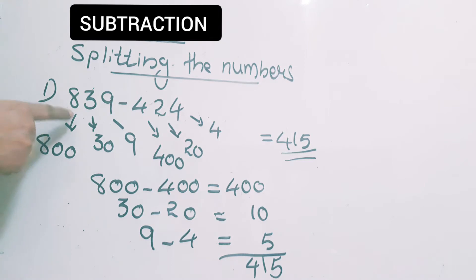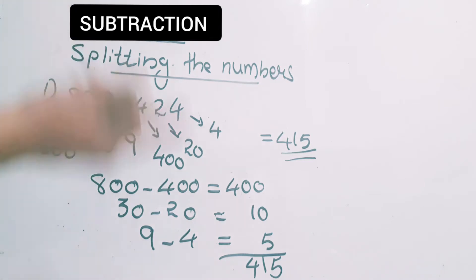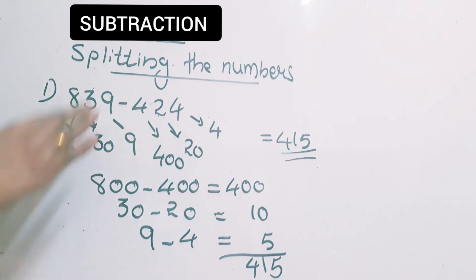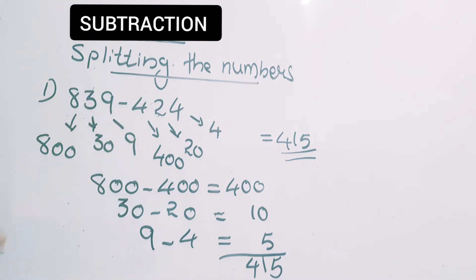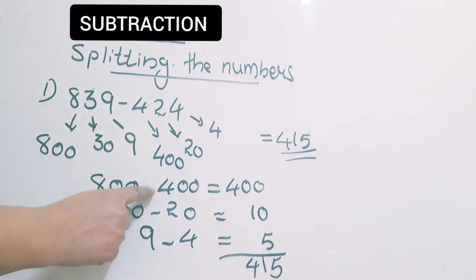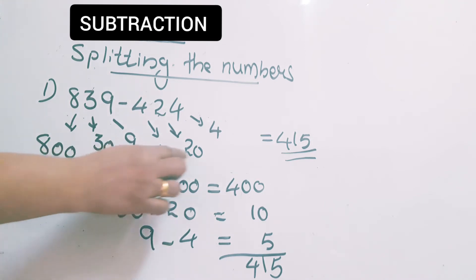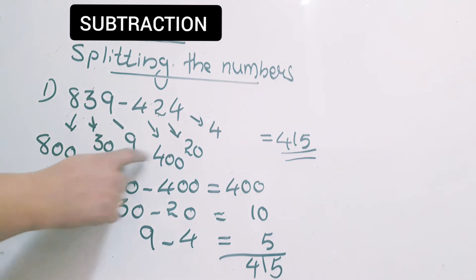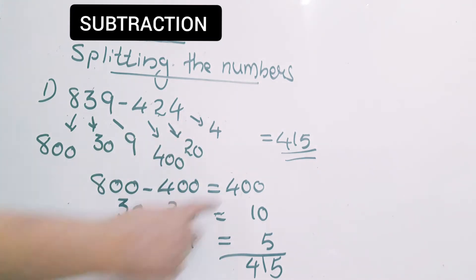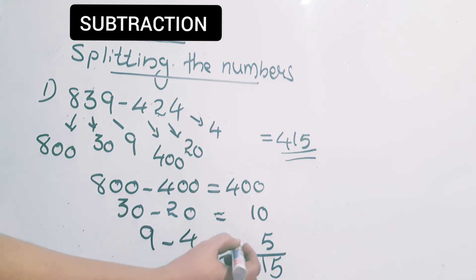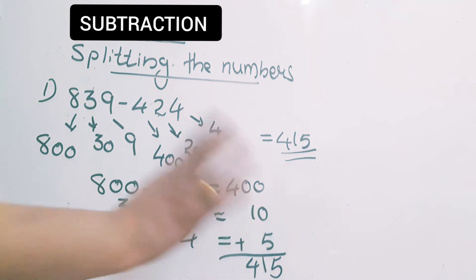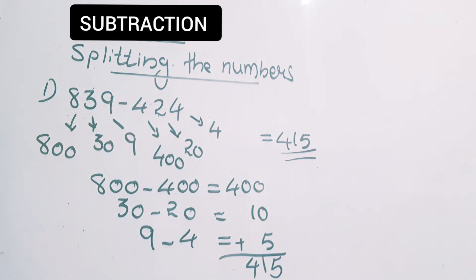Remember: the first step is to split the numbers according to place values. Next step is hundreds minus hundreds for a 3-digit number. If it is a 4-digit number, we start with thousands minus thousands — I will show that in the next example. Then tens minus tens: 30 minus 20 is 10. Then ones minus ones: 9 minus 4 is equal to 5. Finally you have to add all these. Don't think you do minus at the end — we have to join. We get the answer 415.